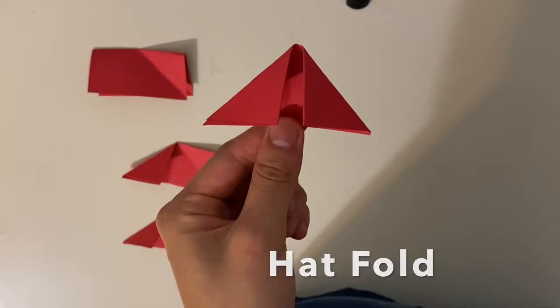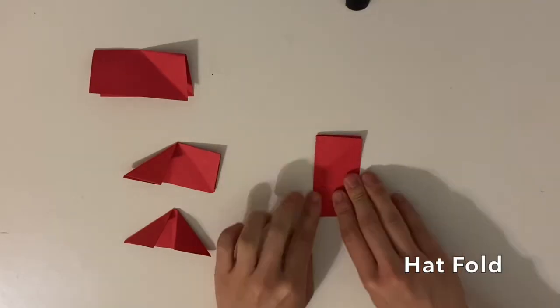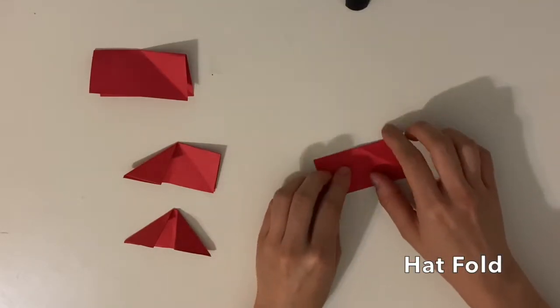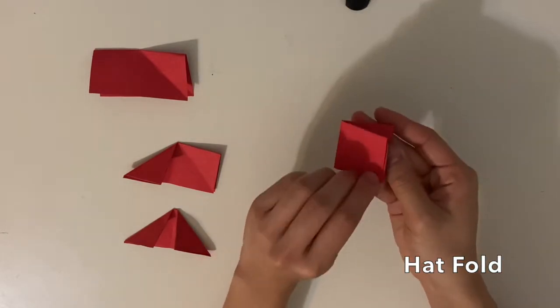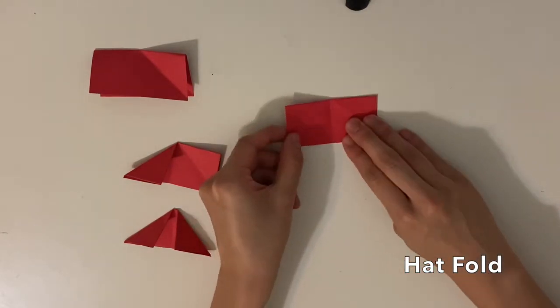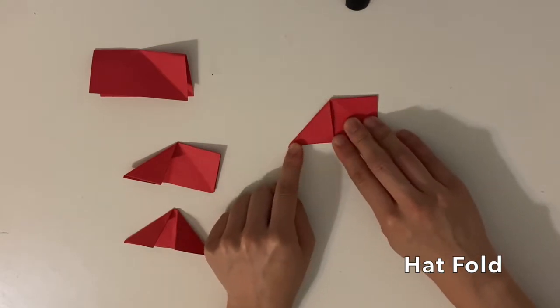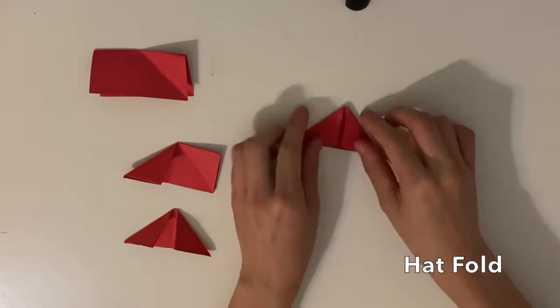The first fold we learned was the hat fold, where you fold your paper in half, fold it in half again, and then open that up once, and use that middle line as a guide to pull the sides down, kind of like a paper airplane.